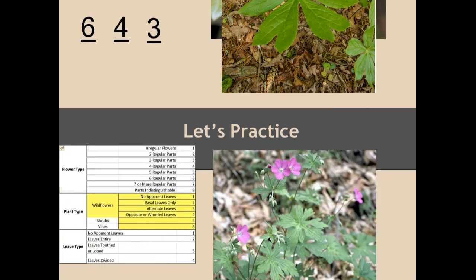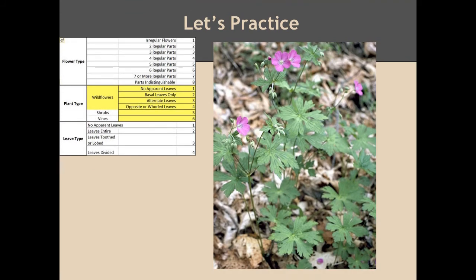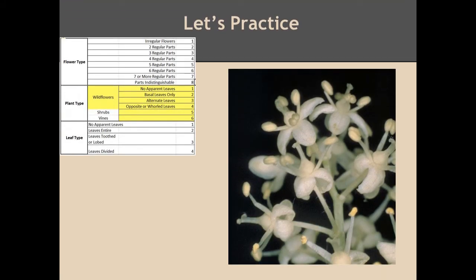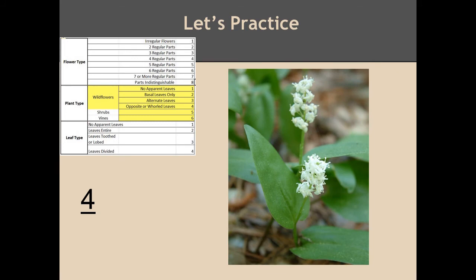Moving on to flower number six. It is a regular flower with five petal parts. The leaves are arranged opposite one another, and the leaves are lobed. Last flower — the leaves are arranged alternately up the stem, and the leaf type? These are also entire leaves.